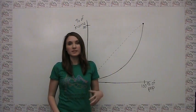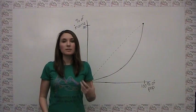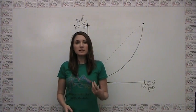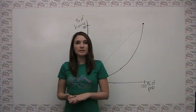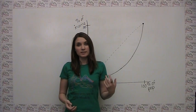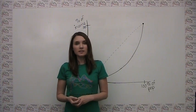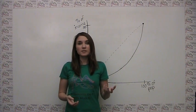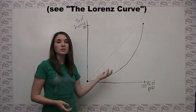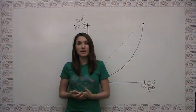The Gini coefficient is a numerical statistic used to measure income inequality in a society. It was developed by Italian statistician and sociologist Corrado Gini in the early 1900s. In order to calculate the Gini coefficient, it is important to first understand the Lorenz curve, which is a graphical representation of income inequality in a society.